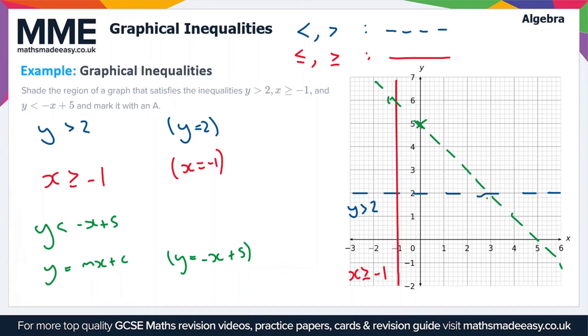So now all that's left to do is shade the region that's bound by these three lines. So that's going to be this region here. And when you do this in an exam, make sure to use a pencil. And then we just have to label this region with an A, like so.